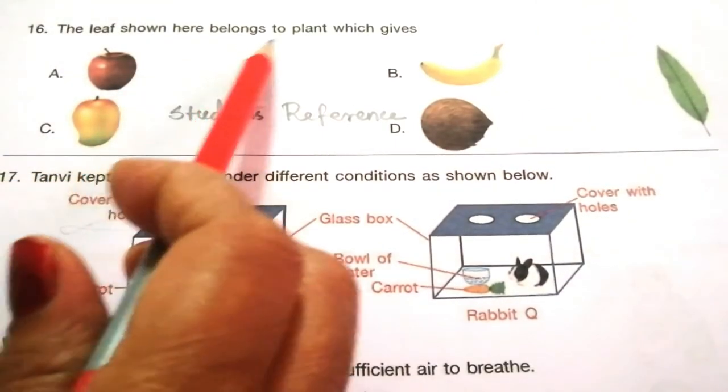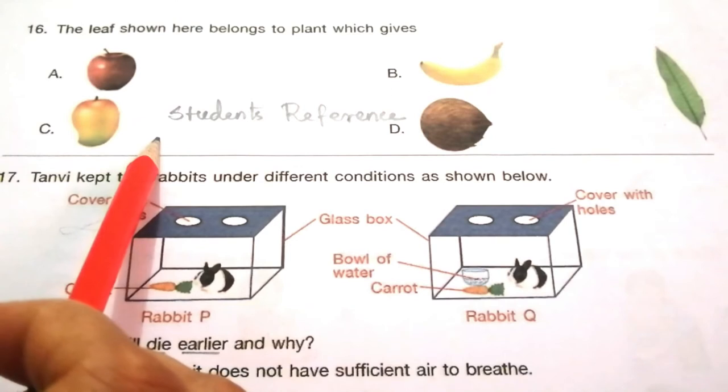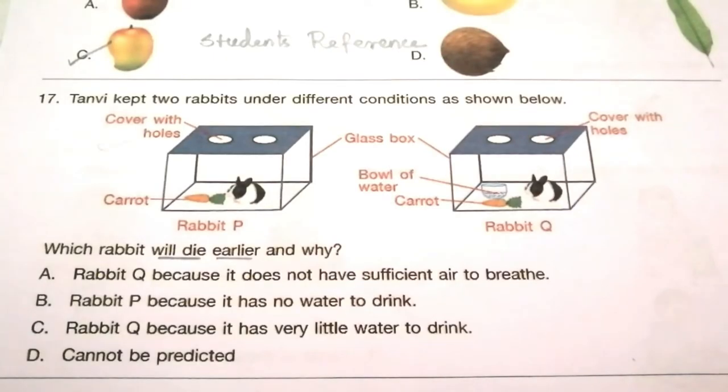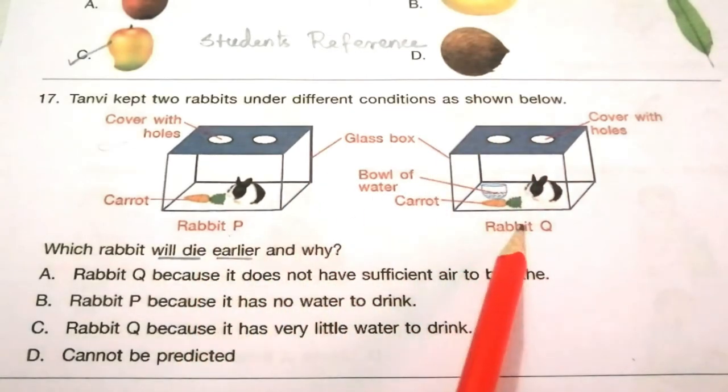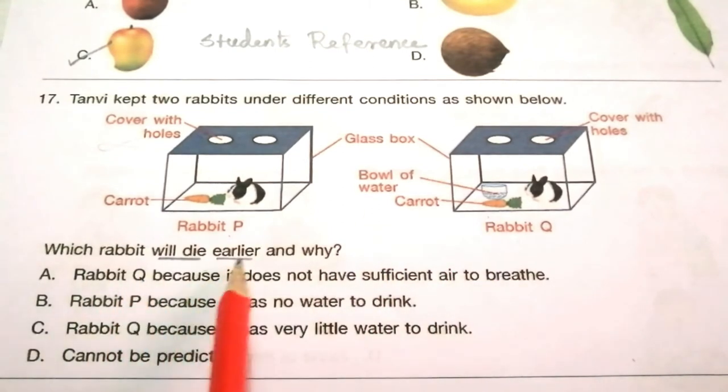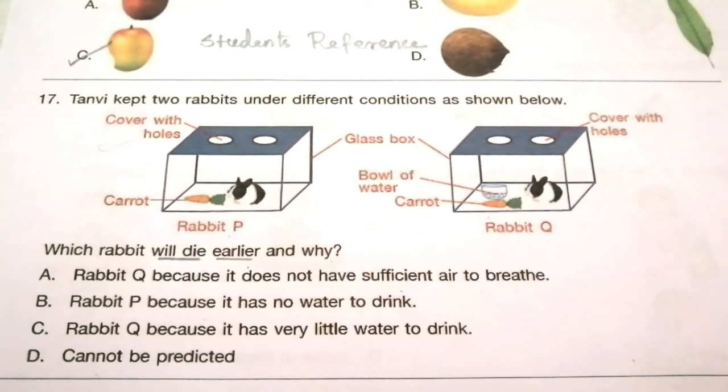Question 16: The leaf shown here belongs to a plant which gives... Look at the pictures carefully. The answer is C, mango. Question 17: Tanvi kept two rabbits under different conditions. Which rabbit will die earlier and why? Rabbit Q because it does not have sufficient air to breathe, Rabbit P because it has no water to drink, Rabbit Q because it has very little water. The answer is B.